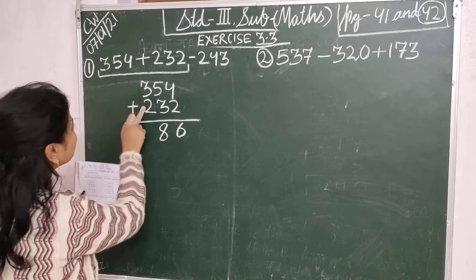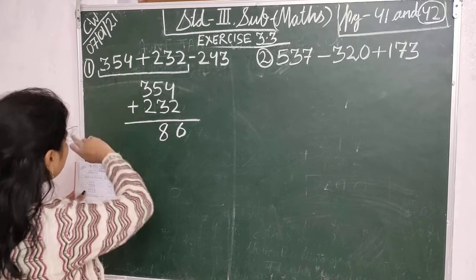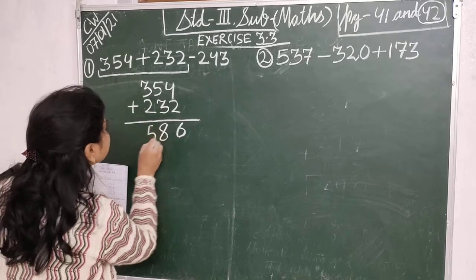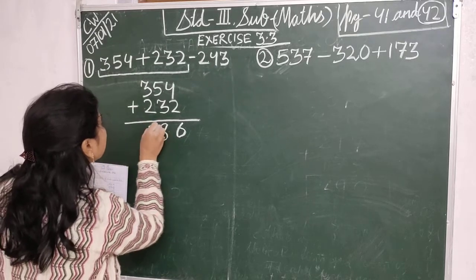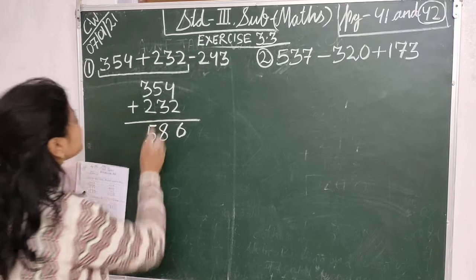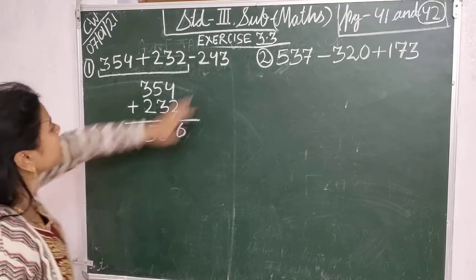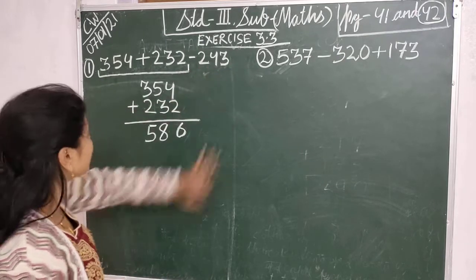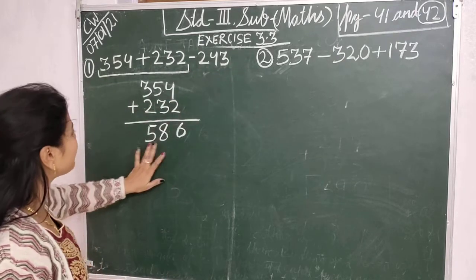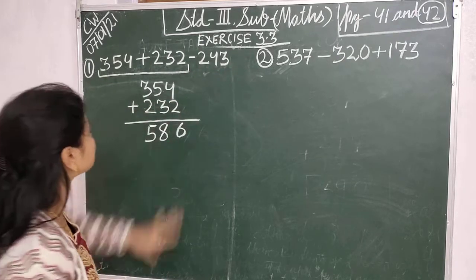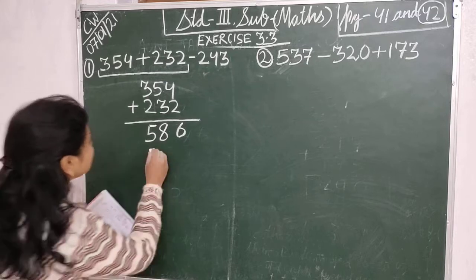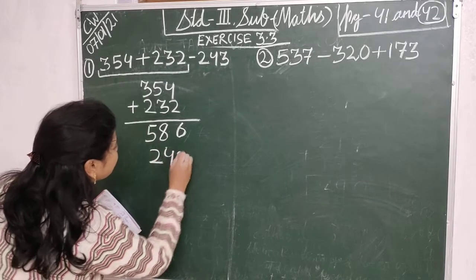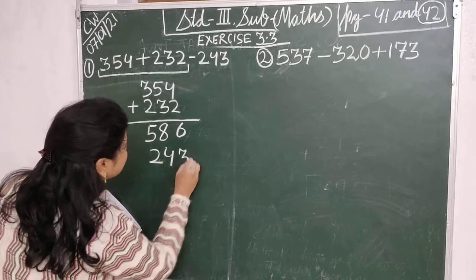Then here 3 and 2. Children, 3 plus 2 is 5. Then the next step is to subtract 243 from 586. So write down here 243.